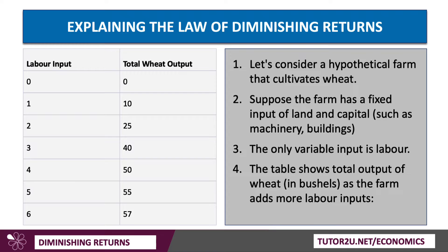So let's take a hypothetical situation: a farm that cultivates wheat, and we're adding more labour to the production process. On the table here, we look at the impact of adding more labour on the total output of wheat. We assume that the farm has a fixed input of land and capital, such as machinery and buildings. The only variable input is labour.